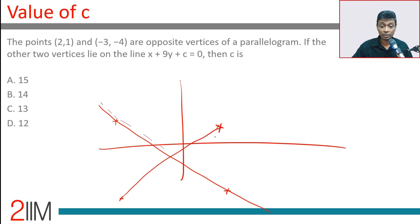We know that the diagonals of a parallelogram bisect each other. This should be equal to this. More importantly, this should be equal to this. Or, if I find the midpoint of this line segment, that should sit on this line.